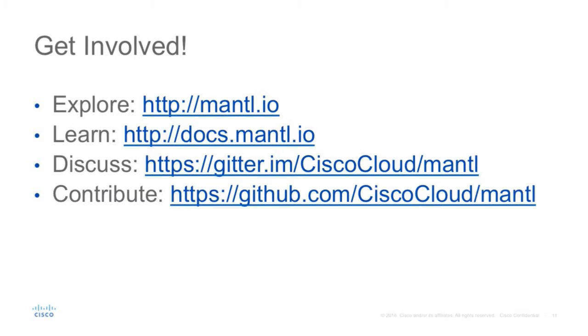How do you get involved? There are different ways to participate in the project. You can explore at mantle.io. You can learn — we have a comprehensive and continually evolving documentation set with additional support for plugins and automation. You can discuss with us through our Gitter Room or Cisco Spark. Reach out, ask questions, and figure out how to get started. And you can also contribute — it's fully open source. We're happy to get pull requests and collaborate on deploying Mantle in production. If you have a particular requirement, we're happy to work with you to get it into the platform.